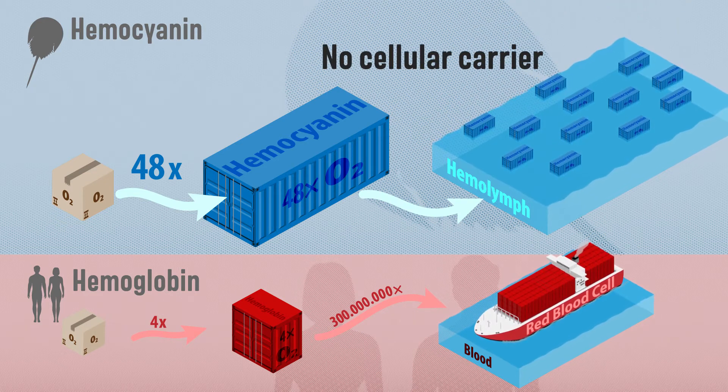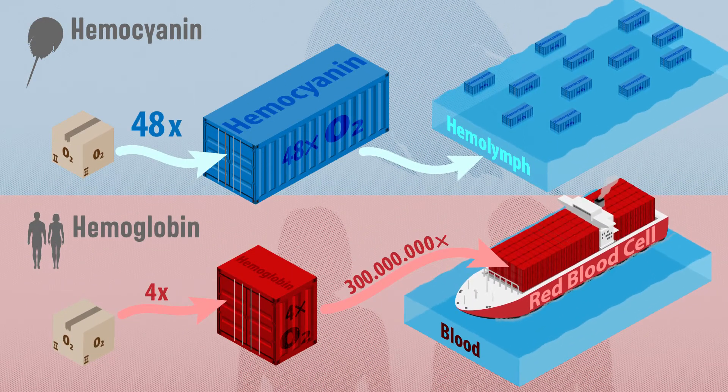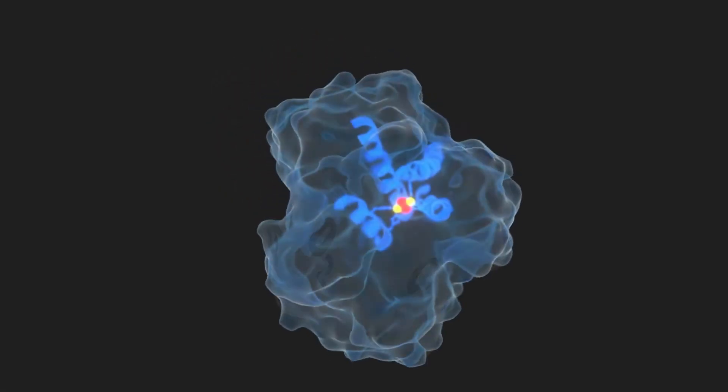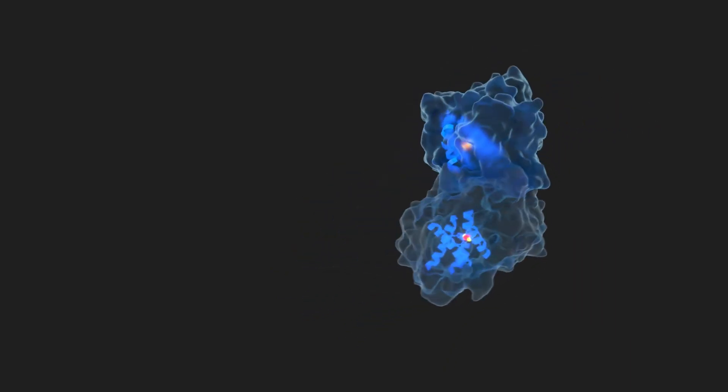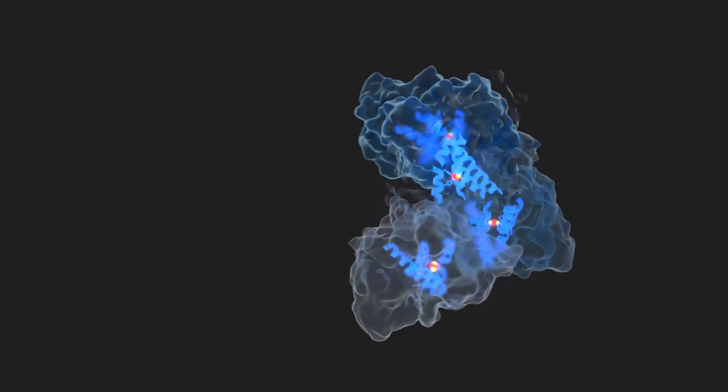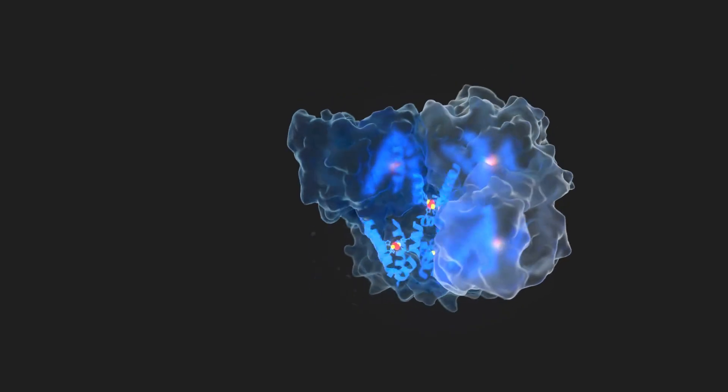Haemocyanin allows the horseshoe crab to live in environments where oxygen concentrations are fairly low. Let's explore the structure of haemocyanin further, starting with a single subunit. Six subunits make up the basic building block, the hexamer.